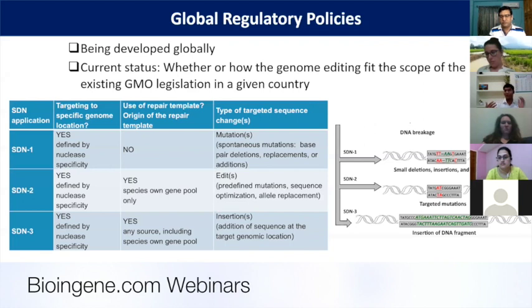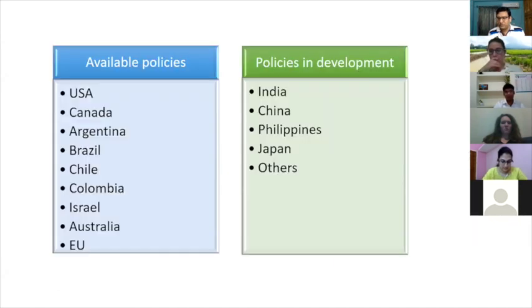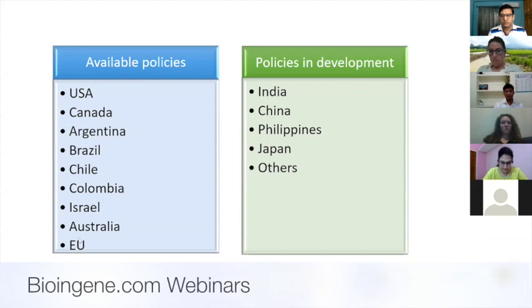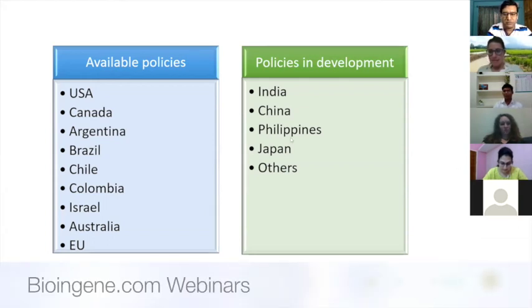SDN1 and SDN2 are most likely to escape the regulatory red tape of GMOs. If you look at the available policies, USA, Canada, Argentina, Brazil, and the European Union have already decided on policies on how to regulate genome-edited crops, while policies are still in development in countries like India, China, Japan, and others.